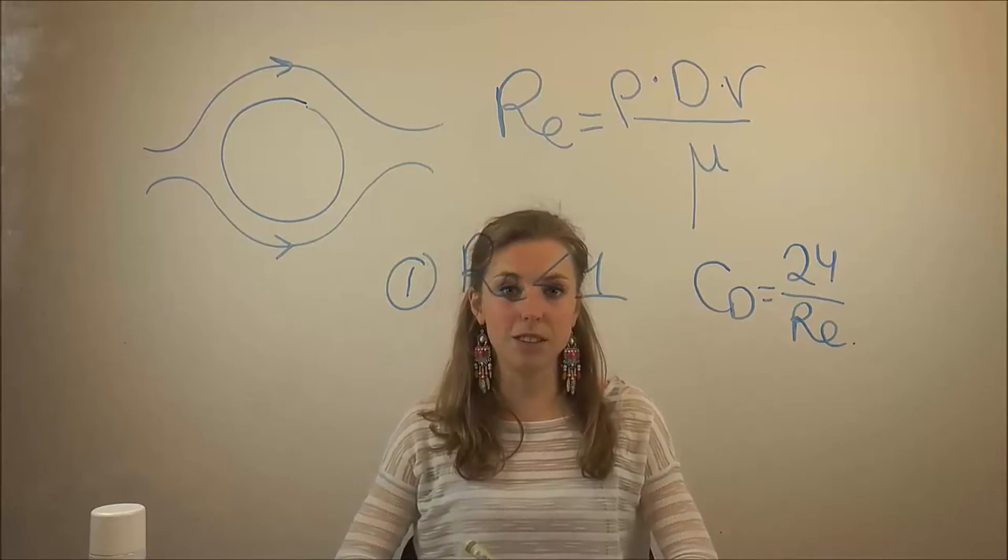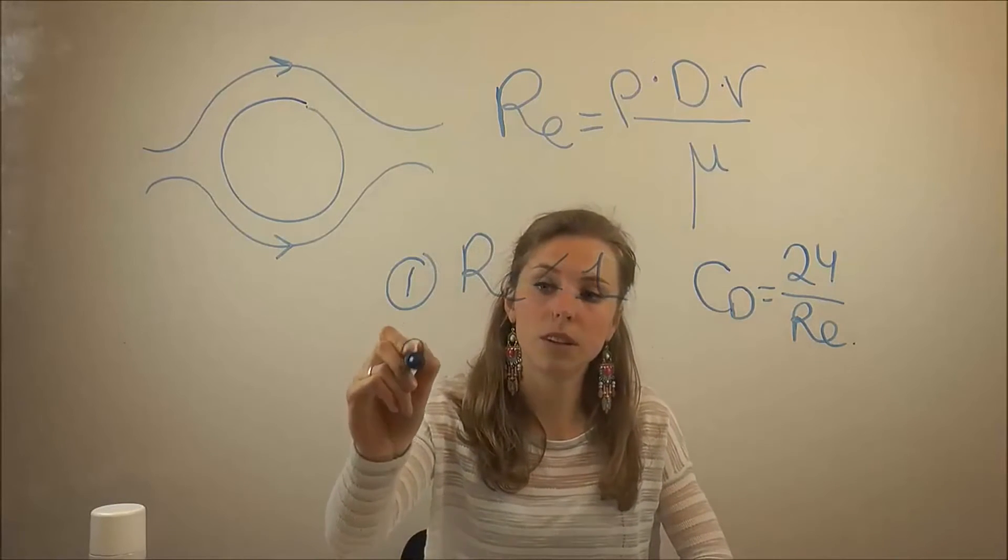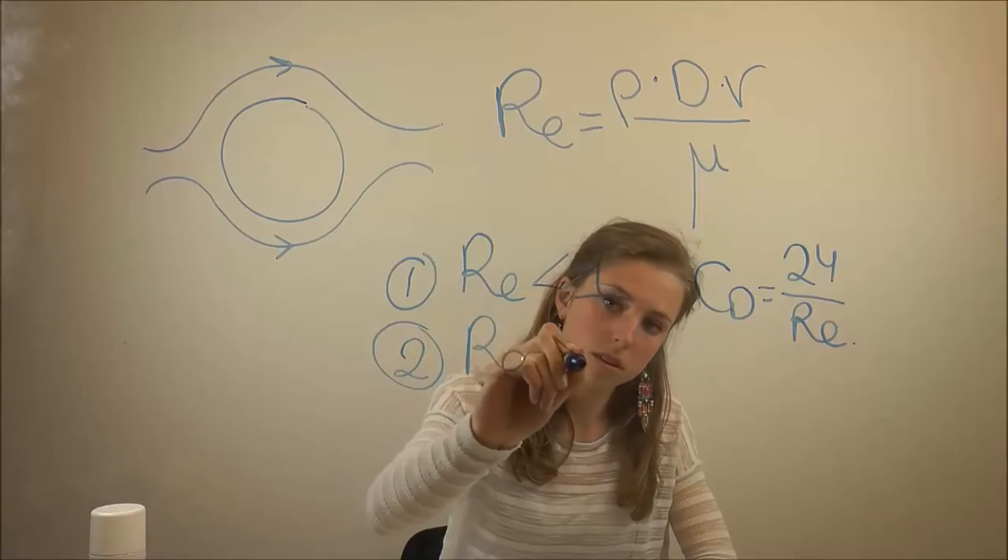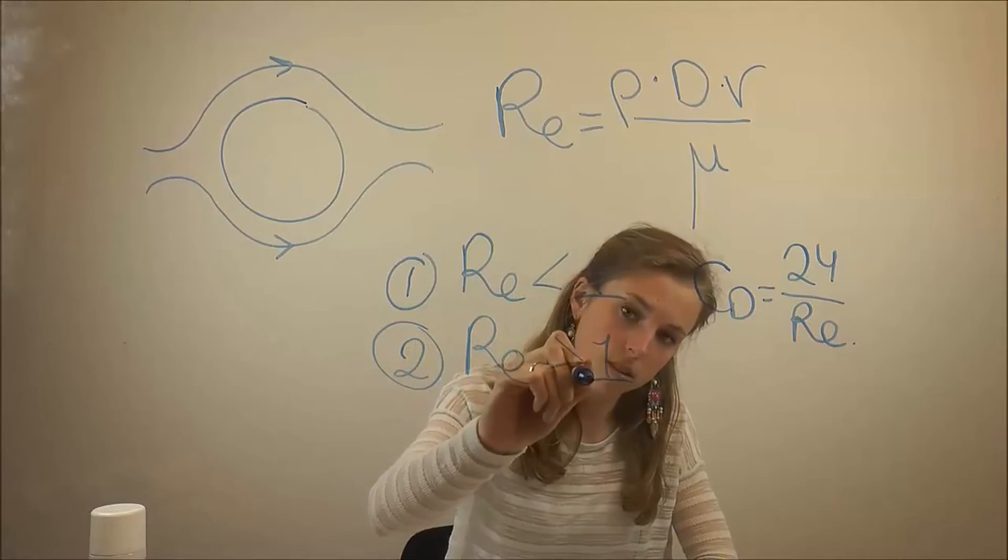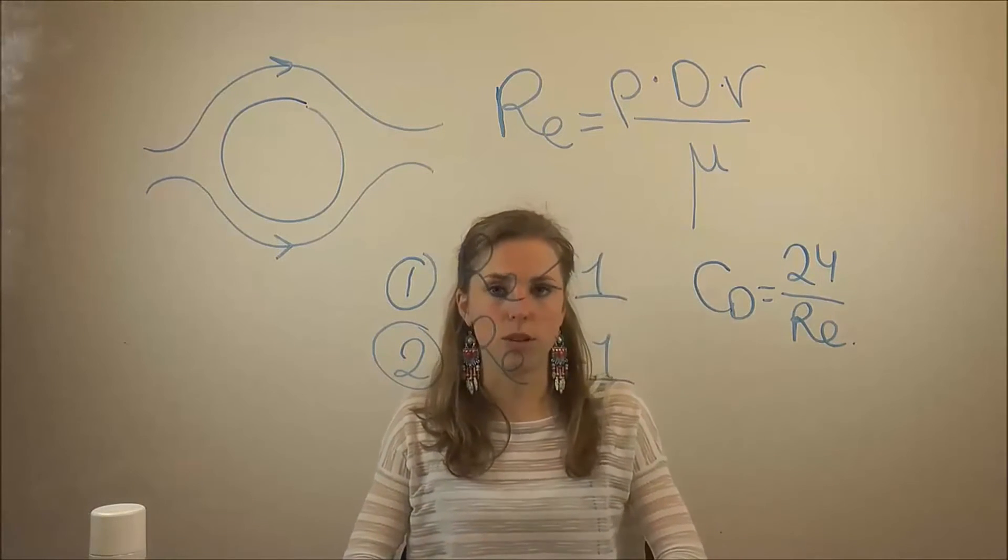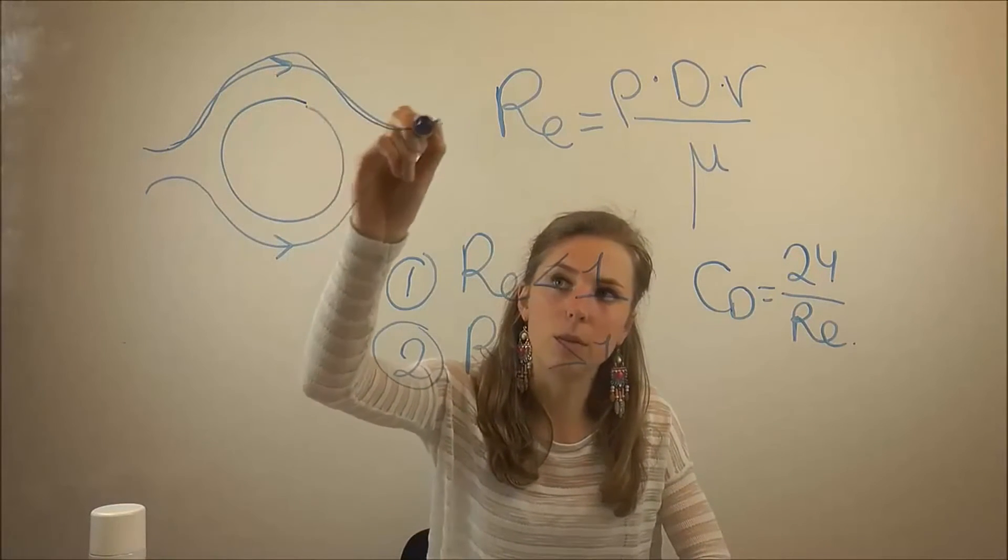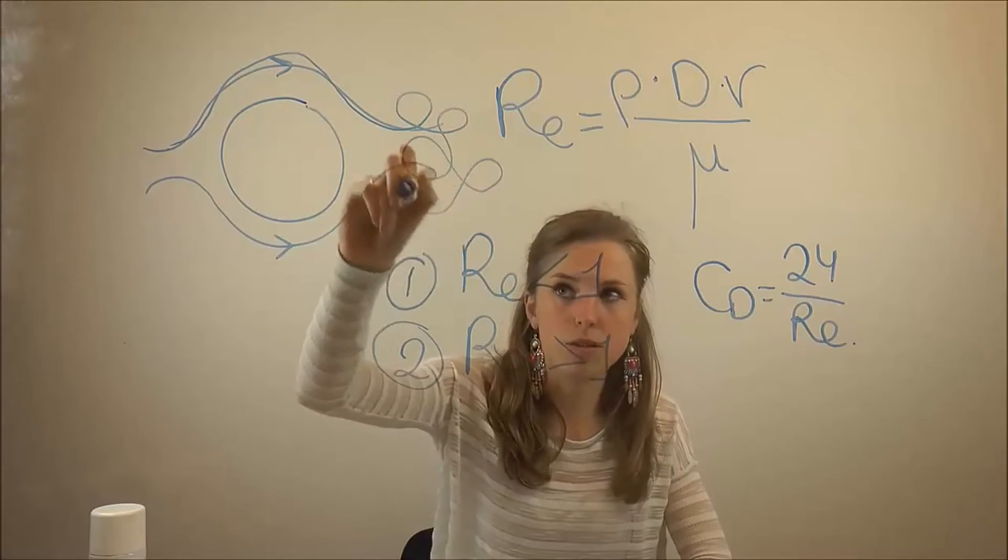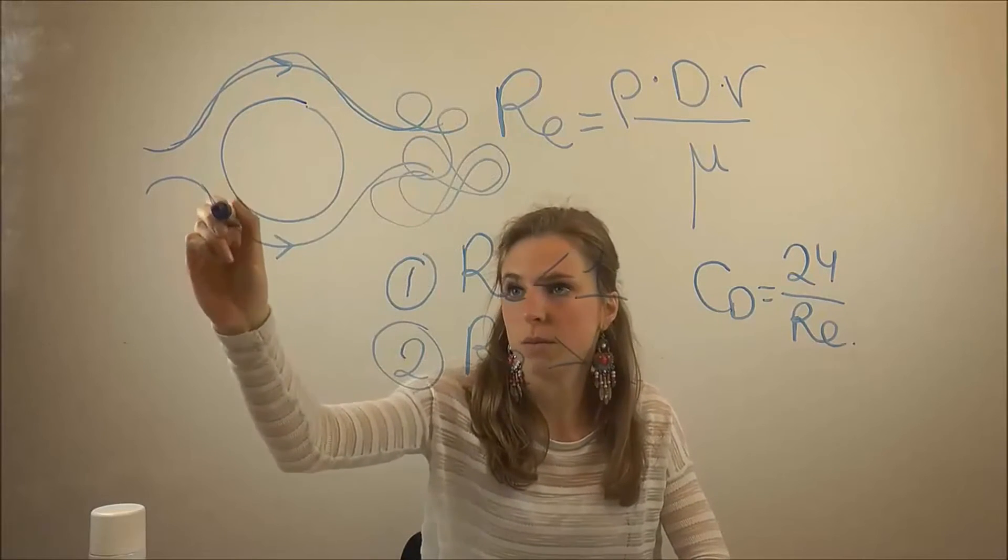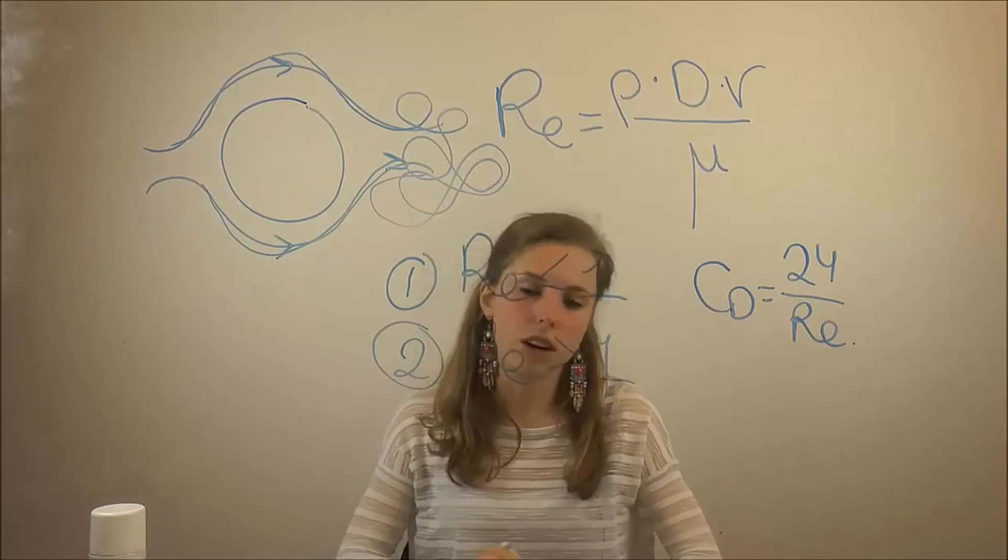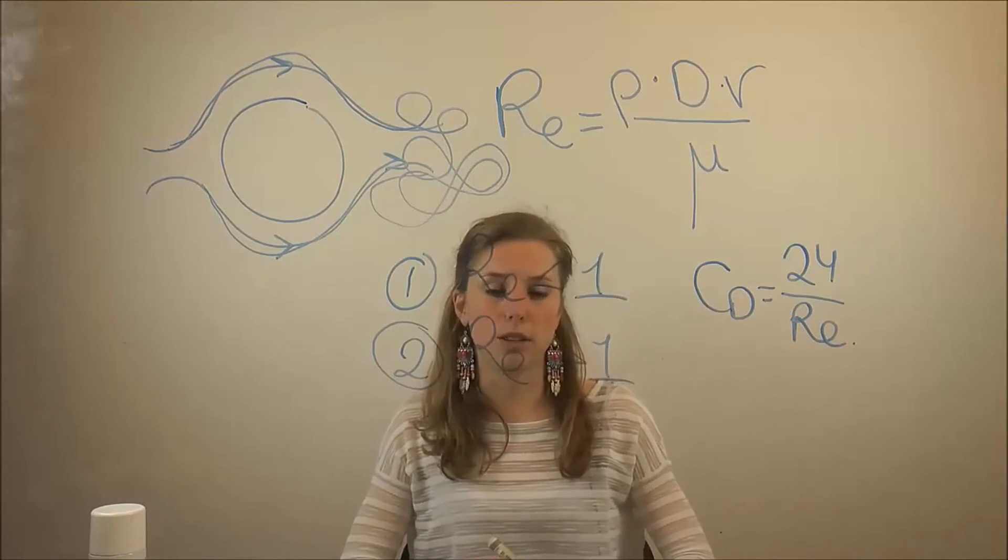And the second situation is where Reynolds number is above one. Then you have a turbulent flow. So the flow isn't flowing linear, but it's making a lot of turbulence after the sphere. So there's no relationship anymore between the drag coefficient and Reynolds number.